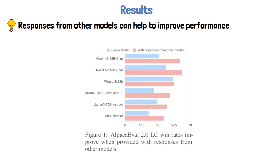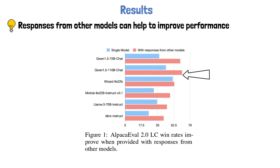Let's now move on to see some of the results presented in the paper. We start by showing that previous responses from other models can help to improve performance. We see the win rate on AlpacaEval-2 for a few models without using responses from other models in blue, and with responses from other models in red. The chart clearly shows that the models achieve a higher win rate when considering responses from other models, though for some of them the gap is more significant than others. For example, we can see a large improvement for Qwen, but barely see a difference for Wizard.